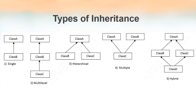Now we will see the different types of inheritance: single inheritance, multi-level inheritance, hierarchical inheritance, multiple inheritance, and hybrid inheritance. In single inheritance, one subclass has only one parent class. Here class B is the subclass and class A is the parent class. Class B inherits only one class, which is class A — that is why it is called single inheritance.